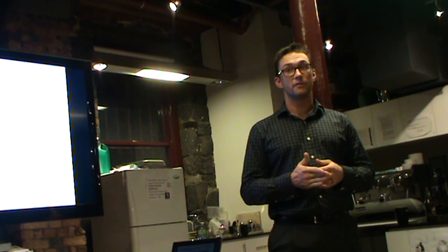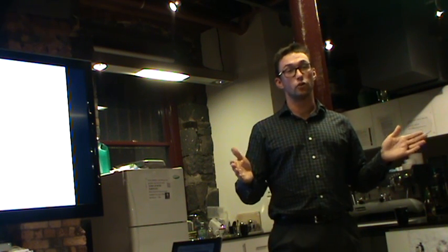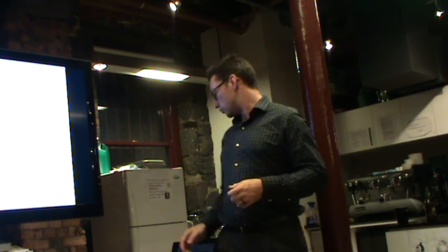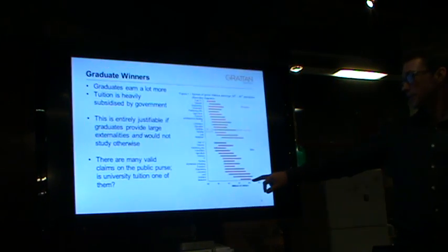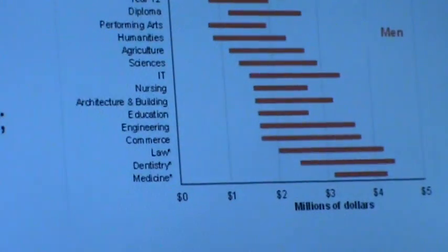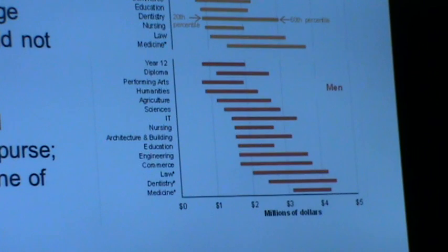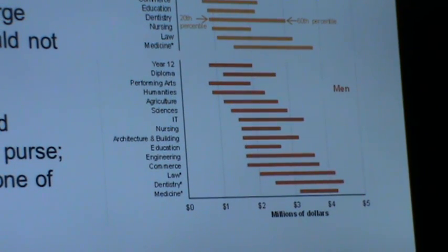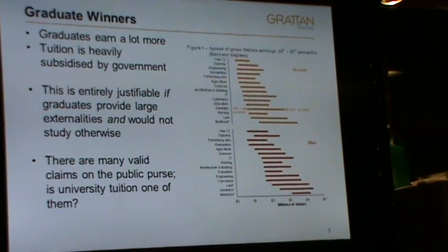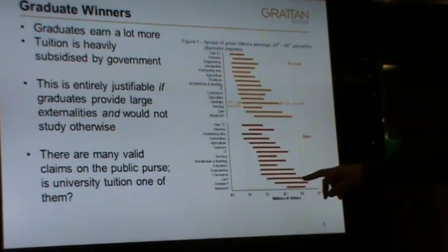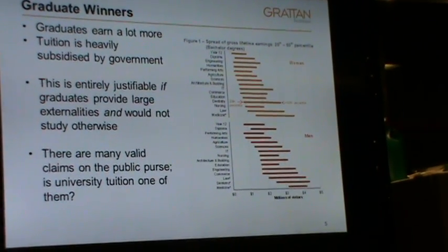Our argument is that we should be booking more of the university tuition costs to HECS. When you're earning two or three times as much as someone without a degree — like in medicine — and receiving a subsidy of $20,000 to $30,000 a year from taxpayers, you have to wonder whether that's good policy. It's almost as though we're giving a gift to people doing dentistry, law, and medicine. Medicine and dentistry in particular pay very little in tuition yet still earn a massive wage premium.